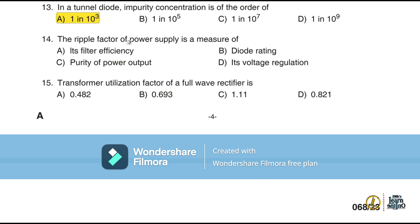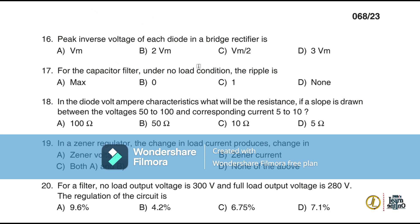Question 14: The ripple factor of a power supply is a measure of purity of power output. The transformer utilization factor of a full wave rectifier is 0.693. Peak inverse voltage of each diode in a bridge rectifier is Vm. Under no load condition with a capacitive filter, the ripple is 0.8. For the diode volt-ampere characteristics, if voltage changes from 50 to 100 V and current from 5 to 10 mA, the resistance is ΔV/ΔI = 50/5 = 10 ohms.